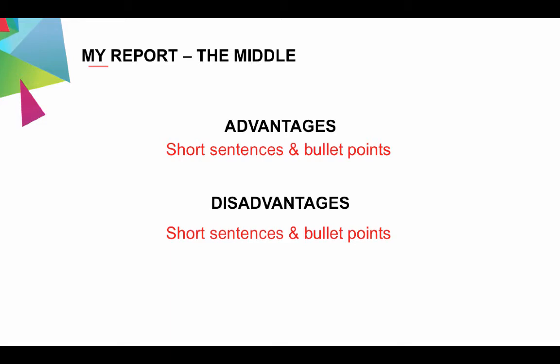You're going to organise the disadvantages in the same way — short sentences in bullet points. You'll talk about things like how few people attended, that the school actually lost money, and of course mention that poor boy who burnt himself because the risk assessment wasn't carried out properly. It's a good job he's fine now.